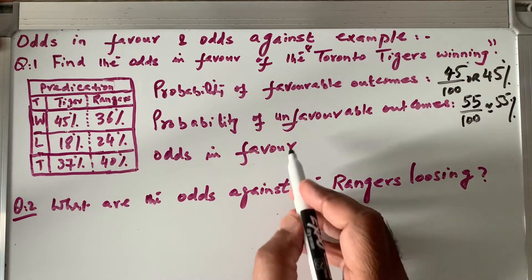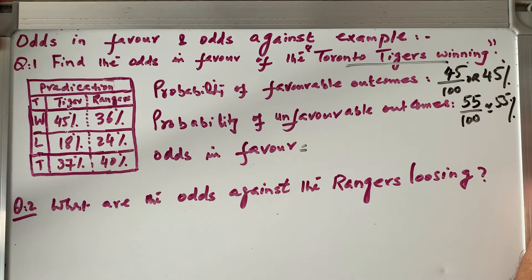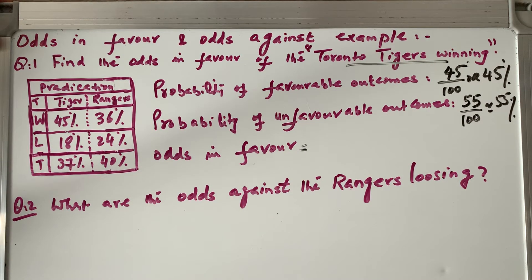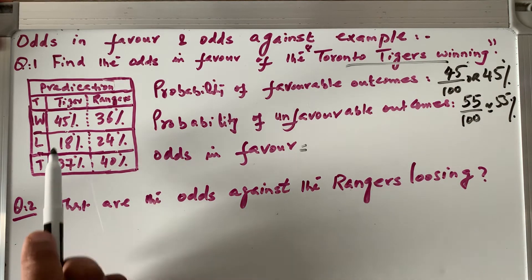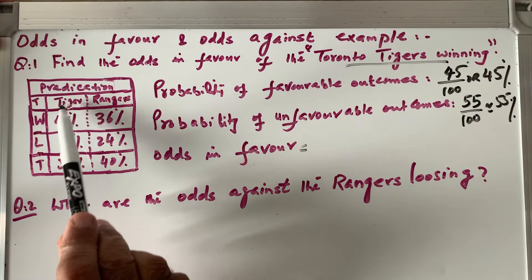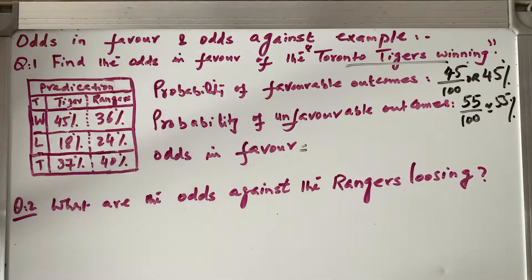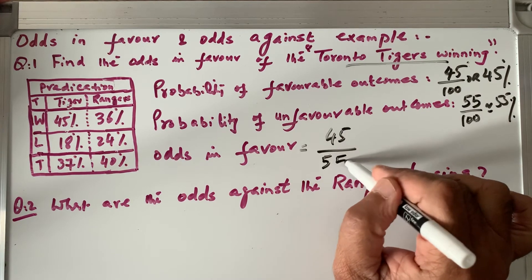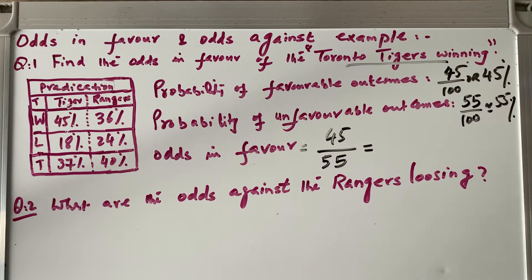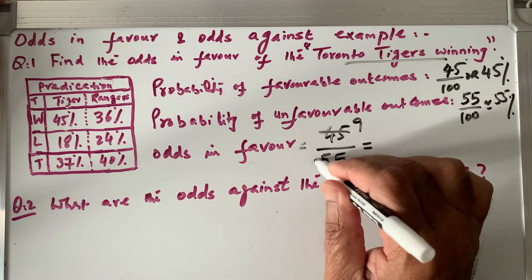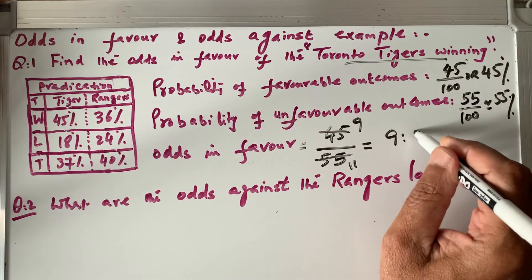Now, odds in favor that Toronto Tigers is winning: odds in favor means number of outcomes in favor divided by number of outcomes against. We have 45 favorable and 55 unfavorable for Toronto Tigers. So favorable is 45, unfavorable is 55. We simplify: 45 = 5 × 9 and 55 = 5 × 11, so the odds in favor are 9 to 11.